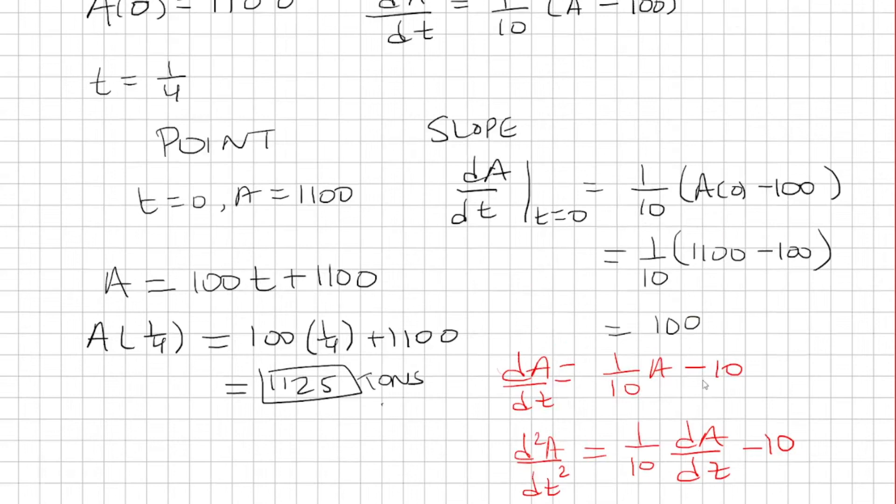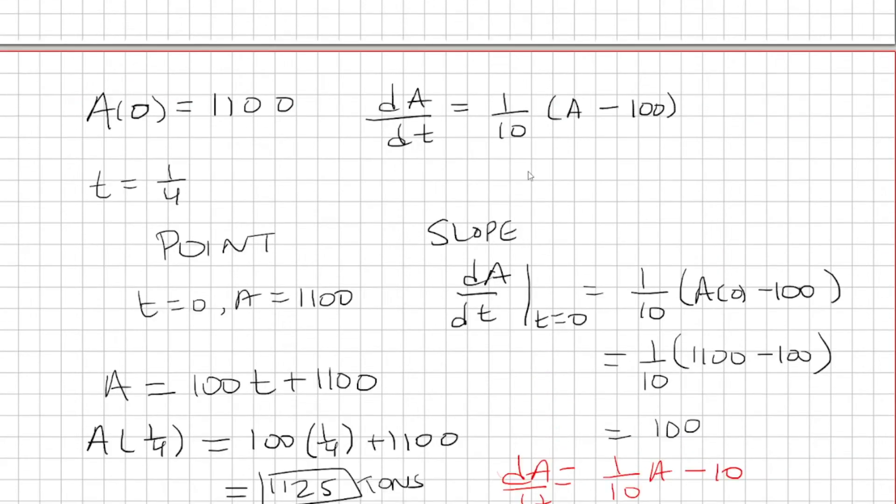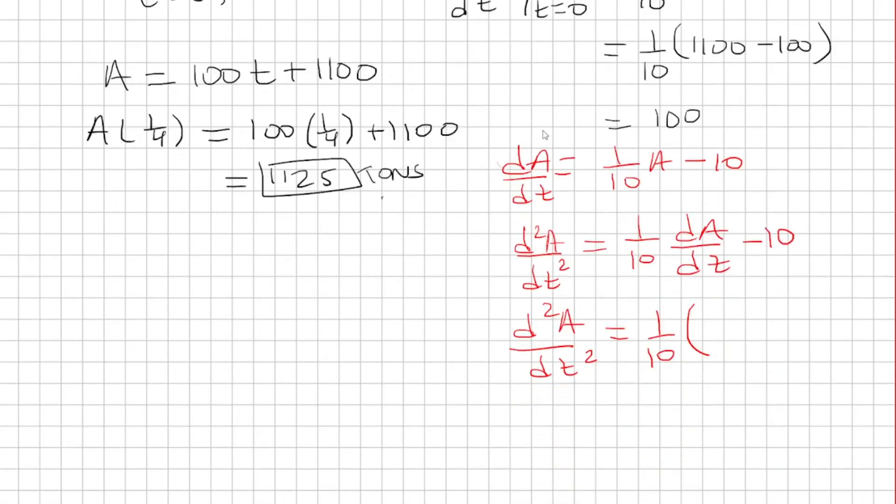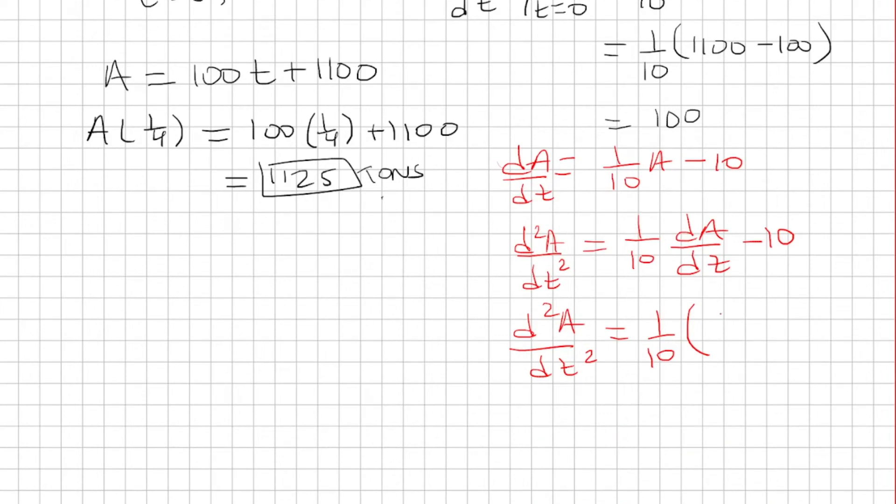Recall, dA over dt is 1 over 10 times A minus 100. And then that's going to be minus 10. So simplifying this, we'll distribute the 1 over 10. So it'll be 1 over 100 A minus 10. And then minus 10, which will be 1 over 100 A minus 20. So this is my second derivative.